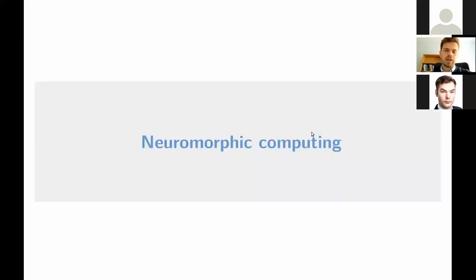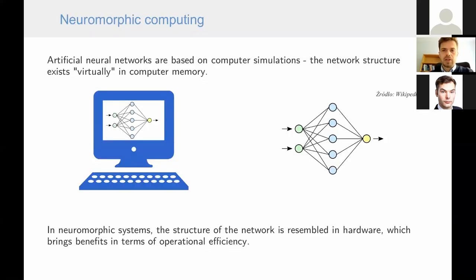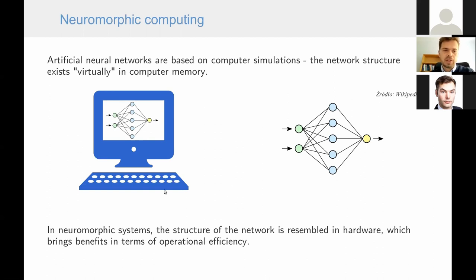One answer to this challenge is the development of neuromorphic computing. In traditional computing, neural network structure exists only in computer memory, but in neuromorphic systems the network structure is embodied in hardware, bringing benefits in operational efficiency. The von Neumann architecture — a CPU connected to memory via a bus — creates a huge bottleneck when simulating neural networks due to the massive data transfer between memory and CPU.